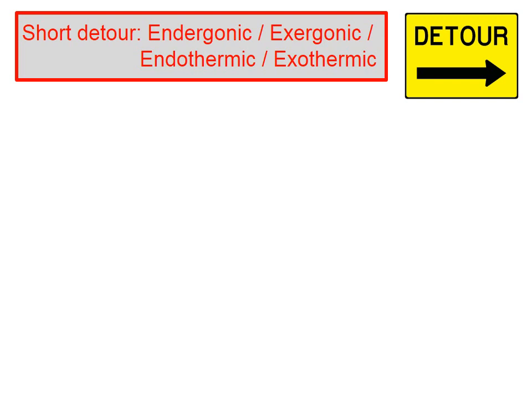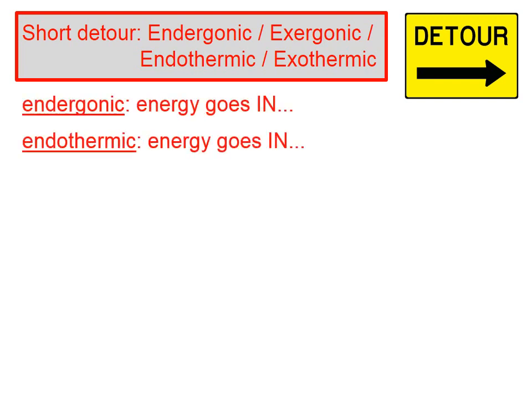Let's take a short detour, because we've just introduced two new terms: endergonic and exergonic. You might have heard endothermic and exothermic in the past — are these related and how? The answer is they are related. In an endergonic process, energy goes in, period. In an endothermic process, energy goes in in the form of heat.